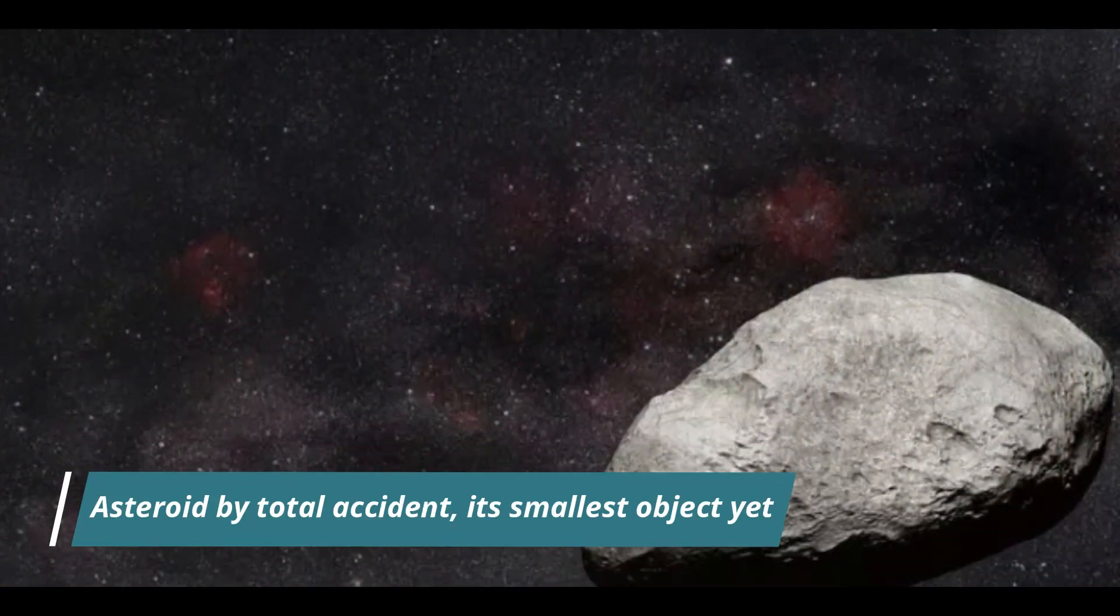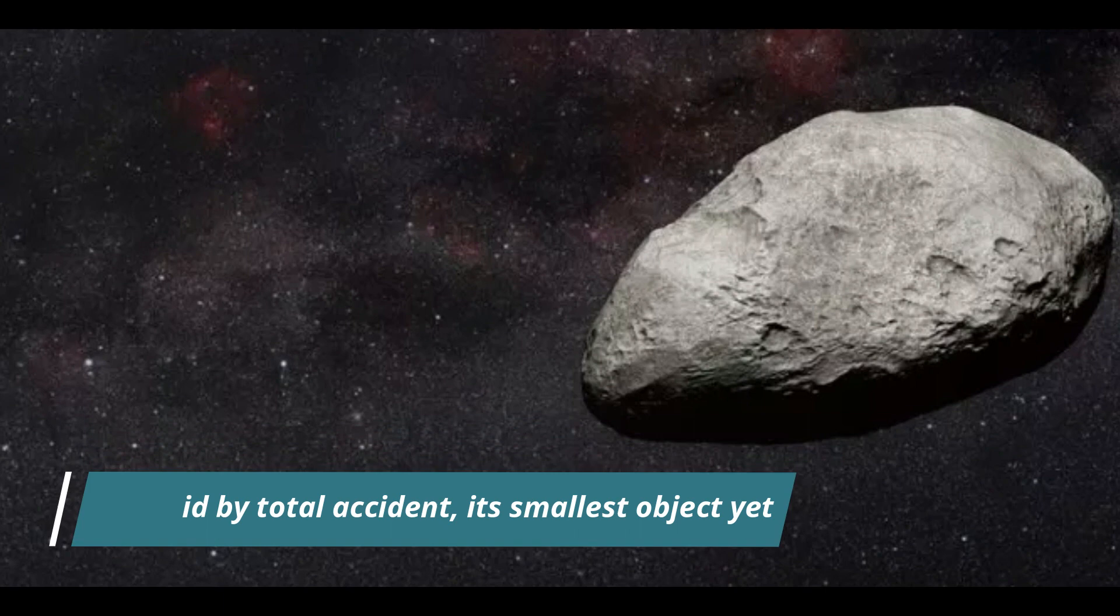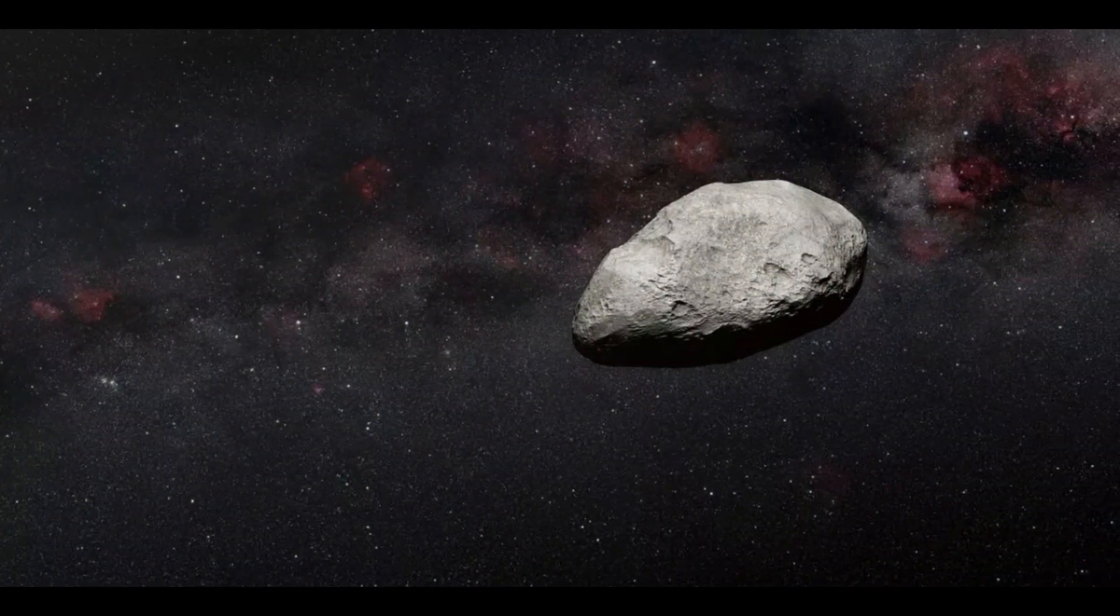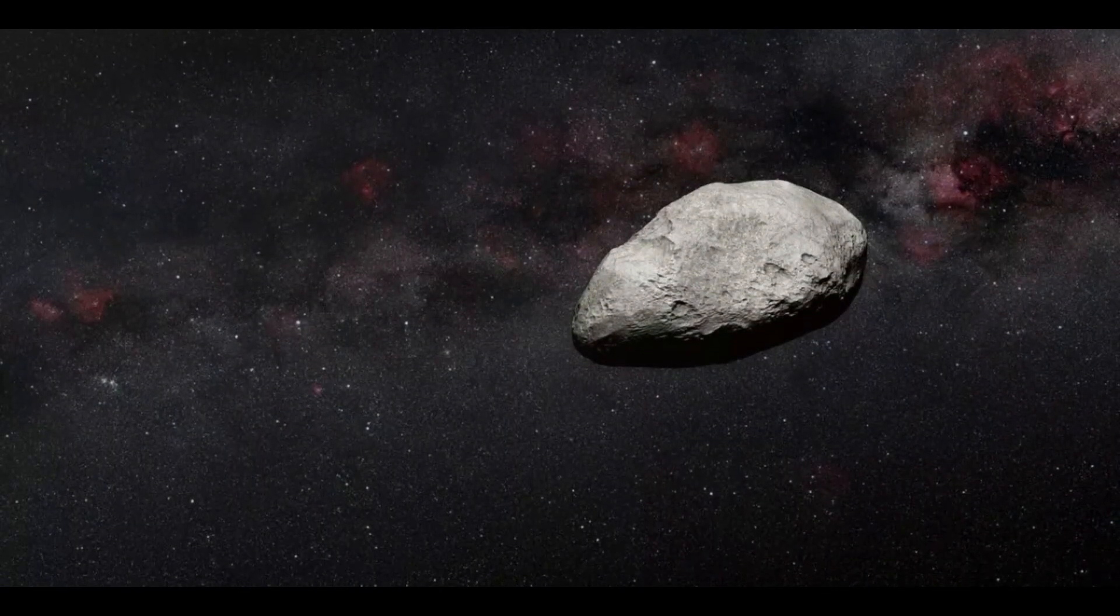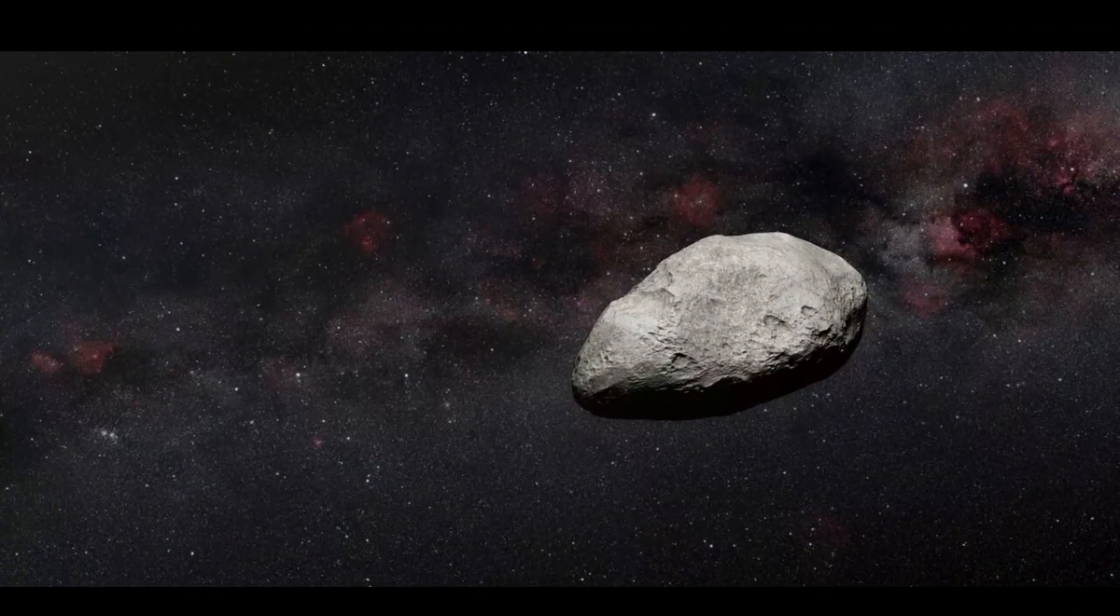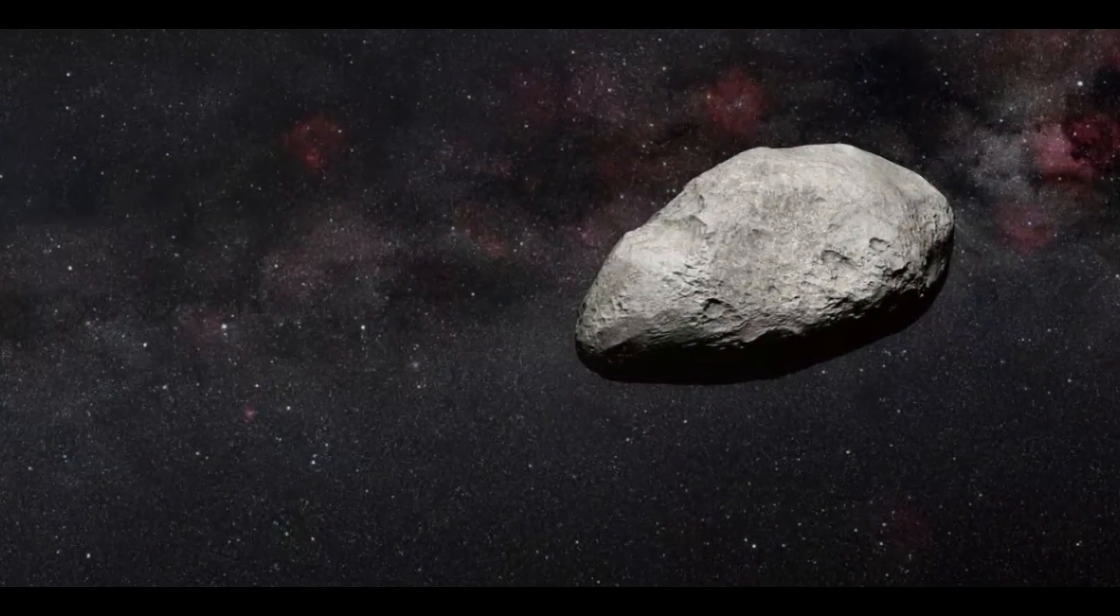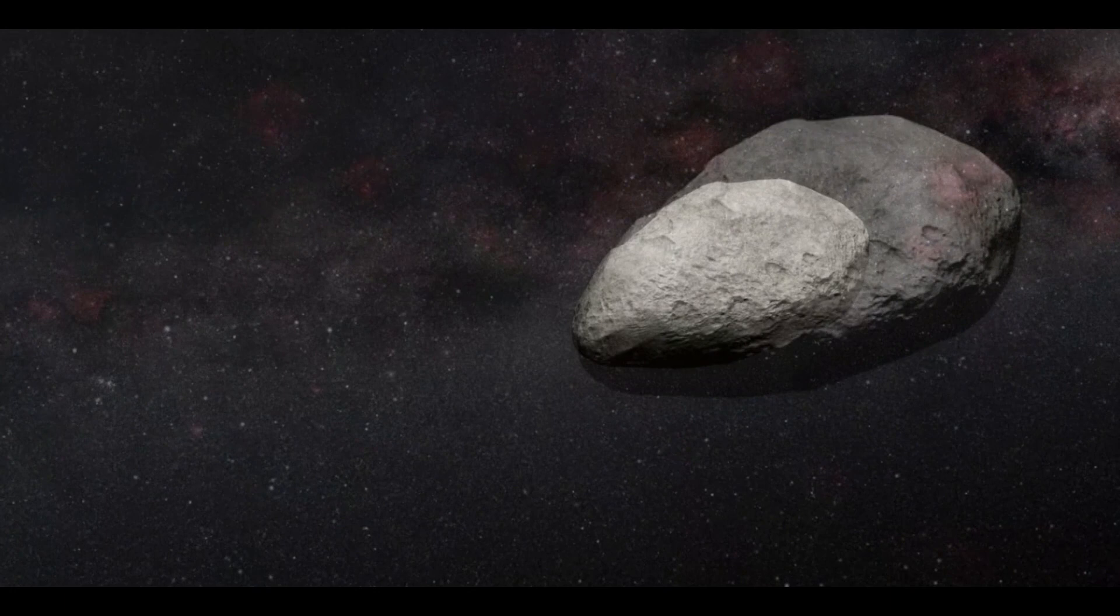Number 9, James Webb Space Telescope just found an asteroid by total accident, its smallest object yet. A tiny asteroid was detected by the James Webb Space Telescope. The space rock is roughly the size of Rome's Colosseum, and could be the tiniest object discovered by the space telescope, since it was sent into space at the end of 2021.